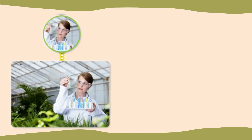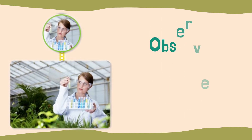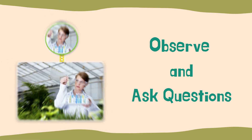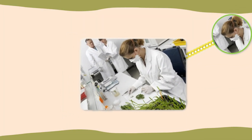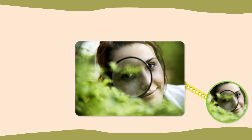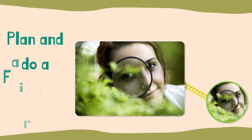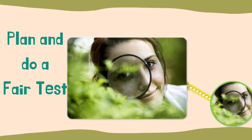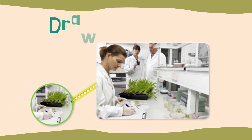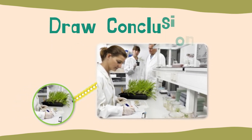The first thing to do is to observe and ask questions about what you want to investigate. Scientists use what they already know to make a hypothesis. After making a hypothesis, the scientist makes a plan to test it, and then the scientist does the test.